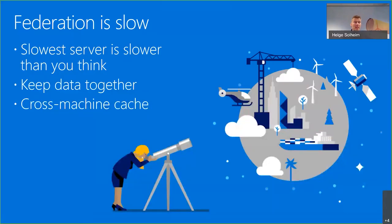We've also seen that federation is really slow. If you make a call that fans out to multiple servers, that slowest server is going to be slower than you think, just statistically. We've had cases where we need to fan out to 40 machines to get the data, and that will typically take a few seconds just because of variance. If you can put all the data on a single machine, it's going to be so much faster — especially at the higher percentiles like the 99th percentile. So keep your data together.